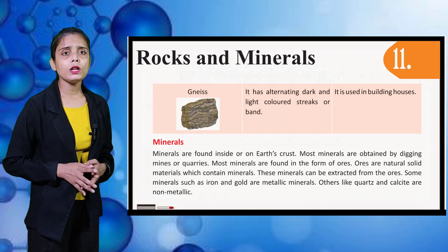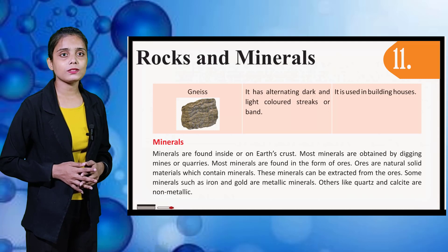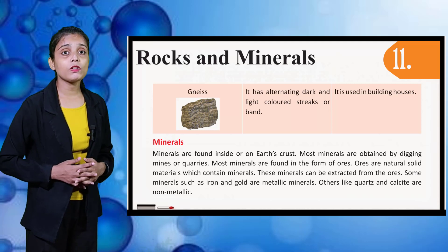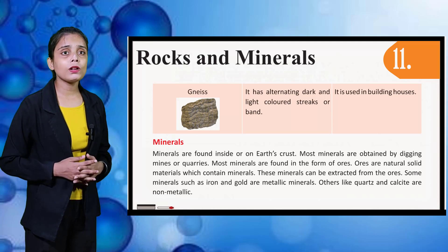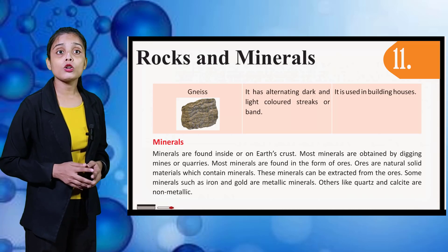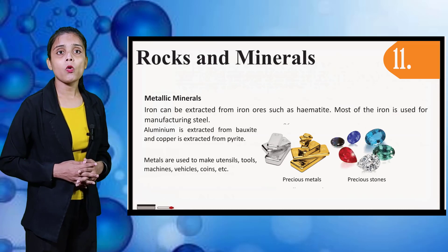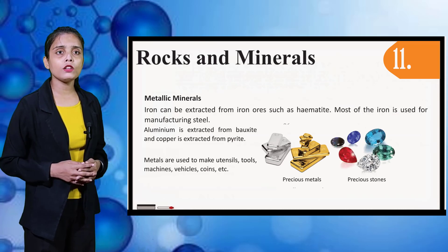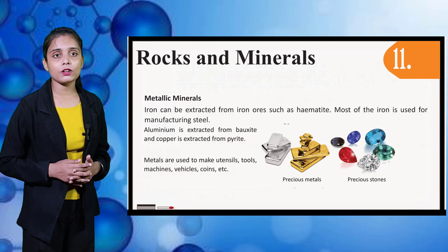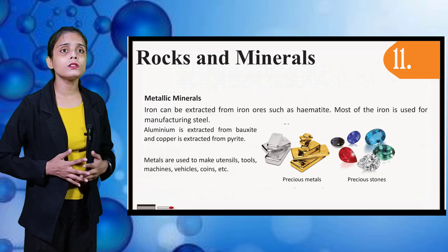Minerals are found inside or on the earth's crust. Most minerals are obtained by digging mines or quarries. Most minerals are found in the form of ores. Ores are natural solid materials which contain minerals; these minerals can be extracted from ores. Some minerals such as iron and gold are metallic minerals. Others like quartz and calcite are non-metallic. Iron can be extracted from ores such as hematite. Most of the iron is used for manufacturing steel. Aluminium is extracted from bauxite and copper is extracted from pyrite. Metals are used to make utensils, tools, machines, vehicles, coins, etc.